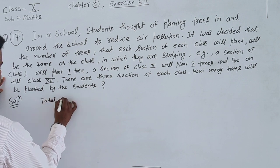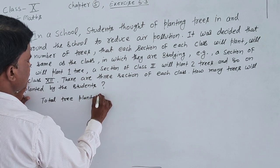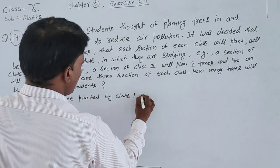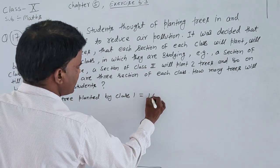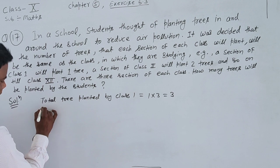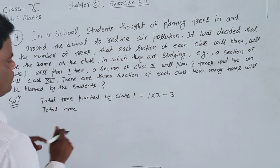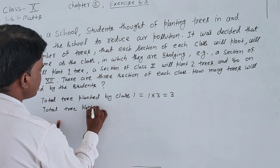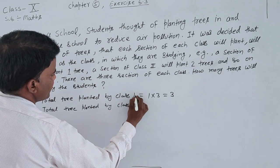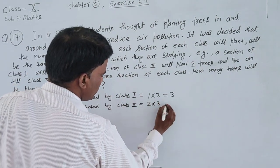Total trees planted by Class 1: Class 1 has 3 sections and each section plants 1 tree, so 1 multiply 3 equals 3. Same as total trees planted by Class 2nd: Class 2 plants 2 trees, so 2 times 3 equals 6.